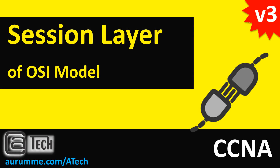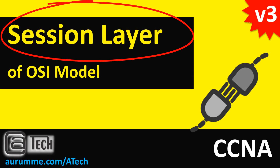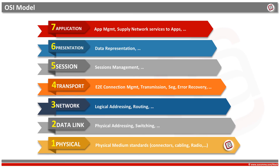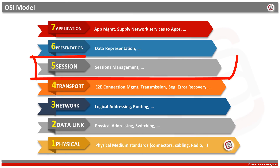Hello friends, let's discuss today about the session layer of the OSI model. As obvious from the name, this layer is designed to allow devices to establish and manage sessions so that multiple channels could be established between terminals. Session layer is the fifth layer in the 7-layer OSI model, after the transport layer.